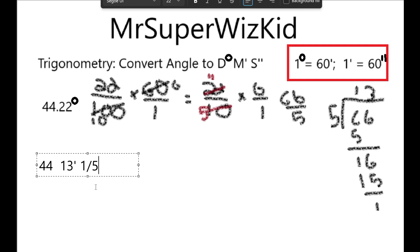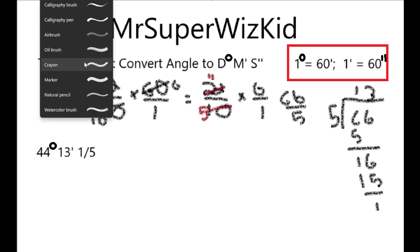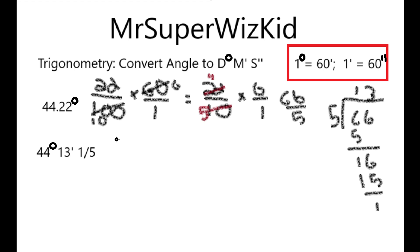So, since we have 1 fifth of a minute, we know that 1 minute is 60 seconds. Just like we handled 22 degrees, and we put 22 over 100, and then we multiply it by 60, 1 fifth is already a fraction. So, I'm going to put 1 over 5, multiply that by 60, because there are 60 seconds in 1 minute, and this is 1 fifth of a minute.